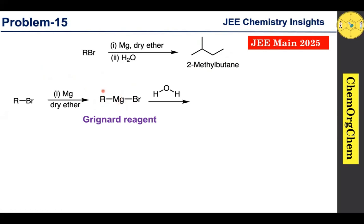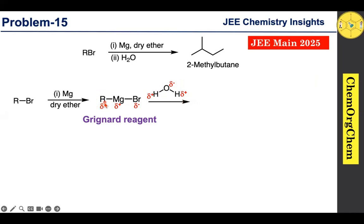Now closely look at the Grignard reagent. Compare the electronegativity values of magnesium and carbon — carbon is more electronegative, so it gets a delta-negative charge, while magnesium gets delta-positive. Similarly, bromine is more electronegative than magnesium, so bromine gets delta-negative. Oxygen is more electronegative than hydrogen in water, so oxygen is delta-negative and the two hydrogen atoms are delta-positive.